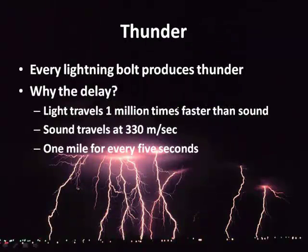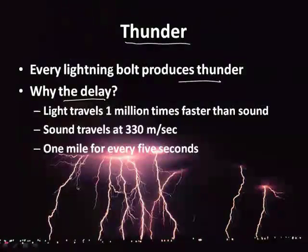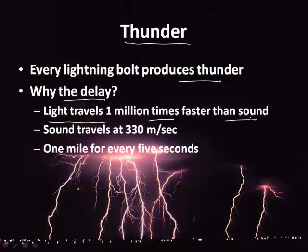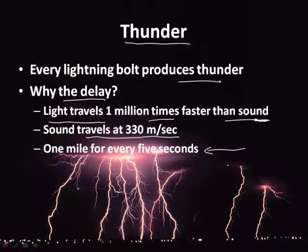Every lightning bolt produces thunder. You've probably noticed a delay between when lightning strikes and when thunder arrives. They are actually produced at exactly the same time, but light travels one million times faster than sound, so it reaches you almost instantaneously. Sound travels at 330 meters per second. For every five seconds you count — like 1001, 1002 — that equals about one mile. If you count to just one second before hearing thunder, the storm is about a fifth of a mile away. If lightning and thunder seem simultaneous, it's right on top of you.